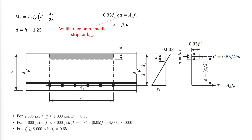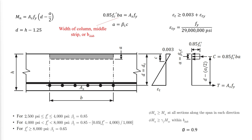Non-prestressed two-way slabs should be designed as tension-controlled. Thus, the net tensile strain should be greater than or equal to εty plus 0.003. The reduced nominal strength φMn should be compared to Mu at all sections along the span in each direction, and to γf multiplied by Msc within B-slab.